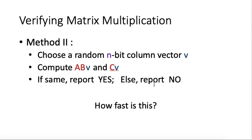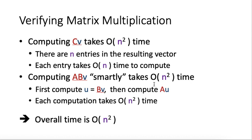How fast is this method? First, computing C times V is easy. Computing C times V takes n-squared time. The reason is that in the result of C times V, this will be a column vector with n entries. And then for each entry, it takes n-time to compute. So n entries, n-time for each, total n-squared time.